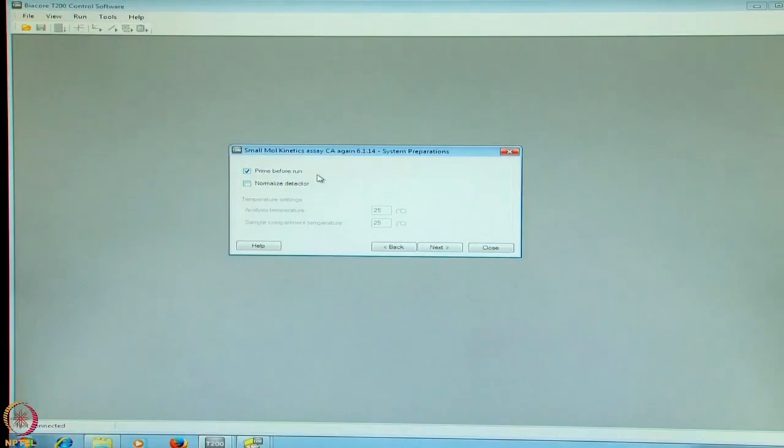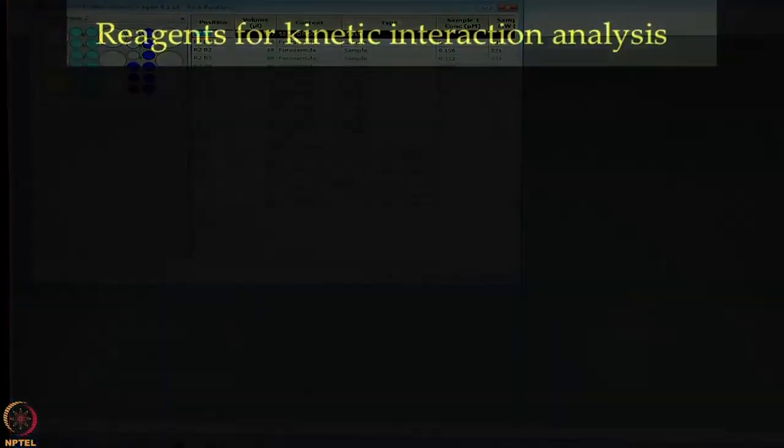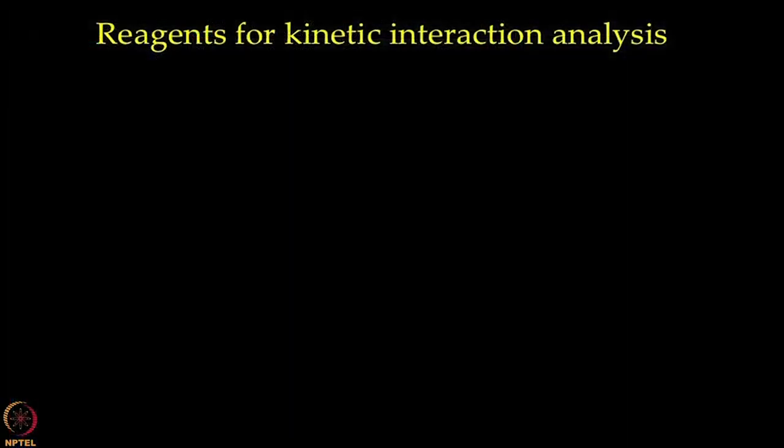We have highlighted prime before run and the following are the rack positions for various samples with furosemide at different concentrations, 50% DMSO, buffer for the startup, solvent correction, 8 different solvent correction sample vials provided for a successful kinetic experimentation of furosemide binding to carbonic anhydrase. As per the volumes listed in the table, we prepare the following samples and reagents.